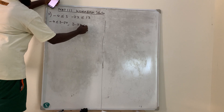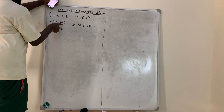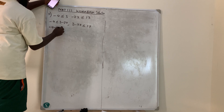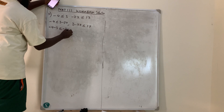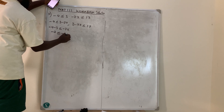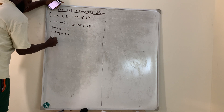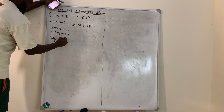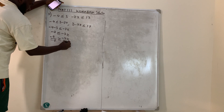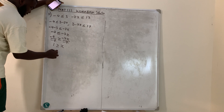Solving the left part: -4 - 3 ≤ -7x, giving -7 ≤ -7x. Anytime you divide by a negative, the sign must change. So -7 ÷ -7 gives 1 ≥ x, meaning x ≤ 1.